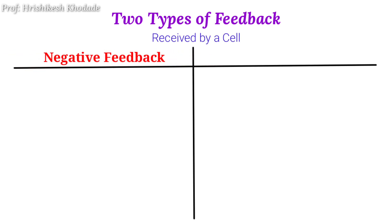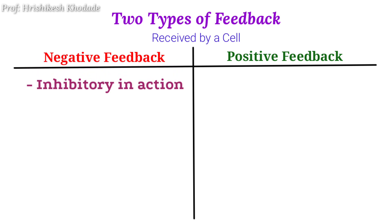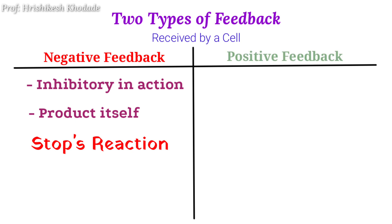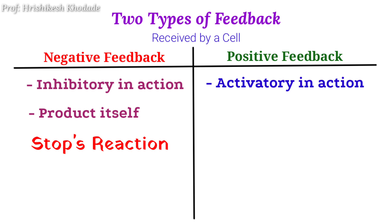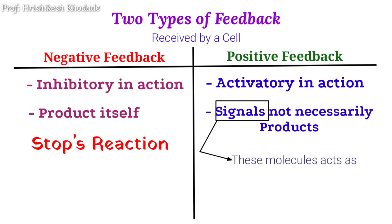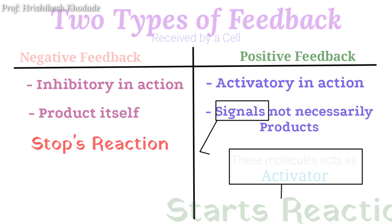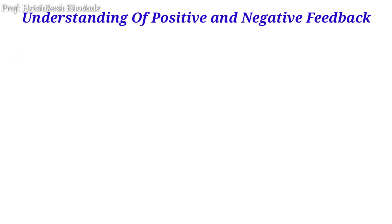One is negative feedback and the other is positive feedback. Negative feedback is inhibitory in action — the product halts or stops the reaction. Whereas positive feedback is an activator in action, where certain molecules — not necessarily products — act as activators in order to induce or start that pathway. Let's discuss positive and negative feedback using one example.